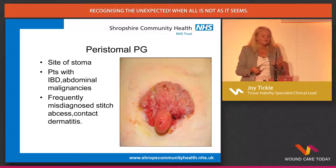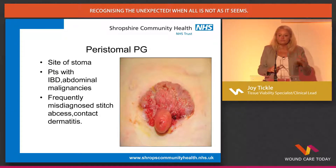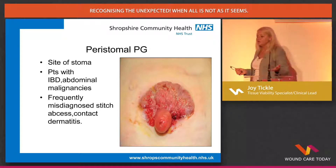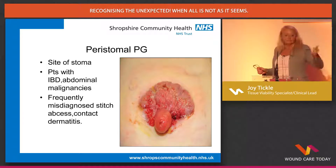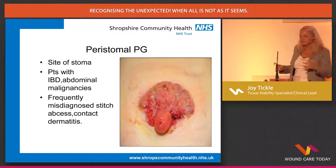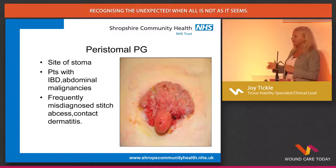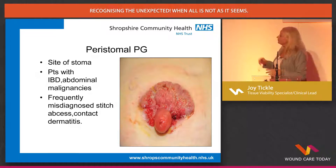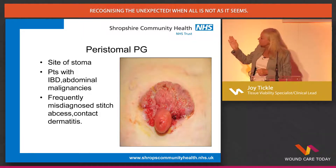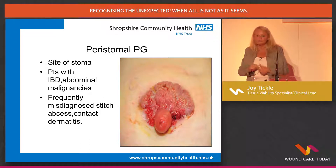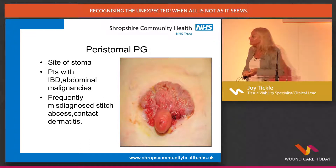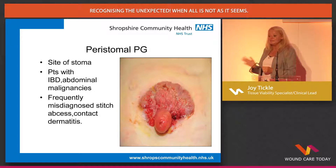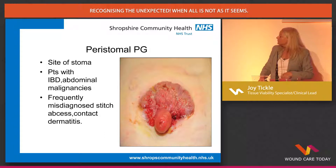You can get a pyoderma around a stoma site. All the will in the world, you're not going to heal that unless we look at what the problem is. Is it the irritable bowel disorder that's not under control? Is there a malignancy? The patient could have had abdominal malignancy. You need the MDT team to work with you on that. Often it's diagnosed as a stitch abscess, overgranulation, or an infection.